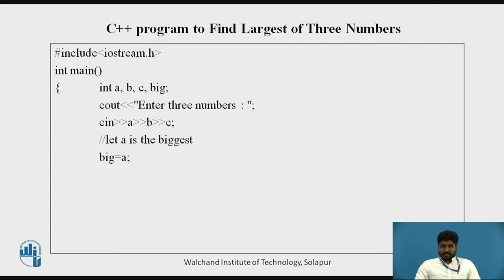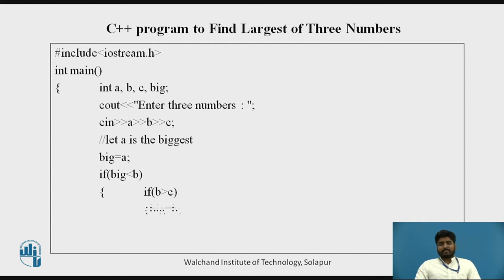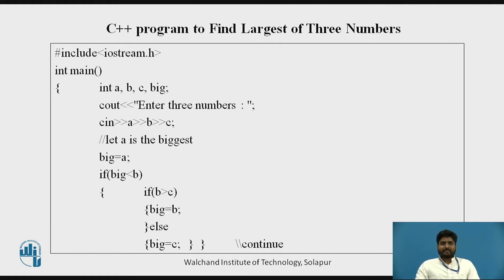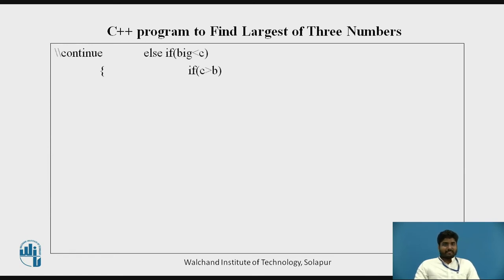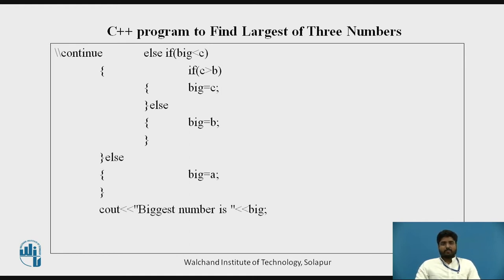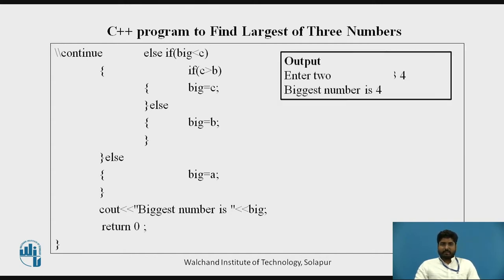We assume a is the biggest initially, so big = a. Then using nested if conditions: if big (a) is less than b, and if b is greater than c, then big = b; else big = c. On the next slide, if big is less than c and c is greater than b, then big = c; else big = b; otherwise big remains a.